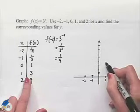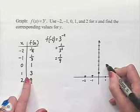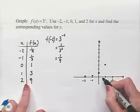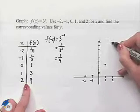1, 3, we'll move over 1 and 1, 2, 3 units up. And then 2, 9 would be 2 units over and 9 units up.